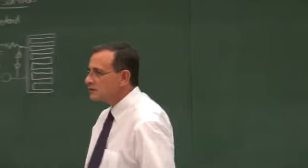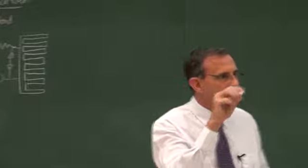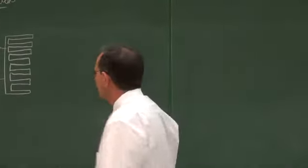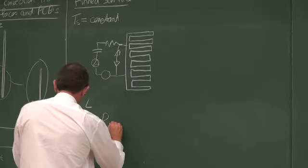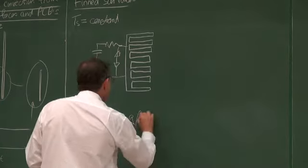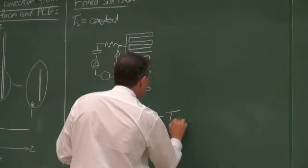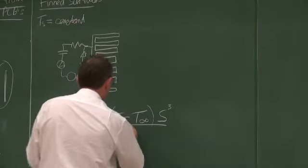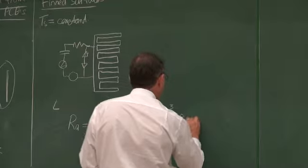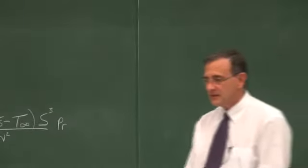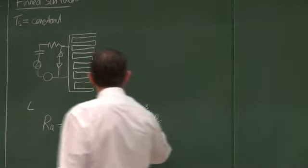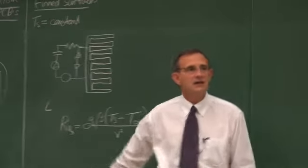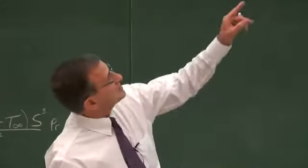So remember that — if you've got a highlighter, I would recommend you highlight something like that. It is very important. So the Rayleigh number is then equal to g multiplied by β, (T_S minus T_∞), and the characteristic length now becomes S, divided by ν² multiplied by the Prandtl number. To indicate that we use S, we show the Rayleigh number with a subscript S, to indicate it is based on the distance between the fins.